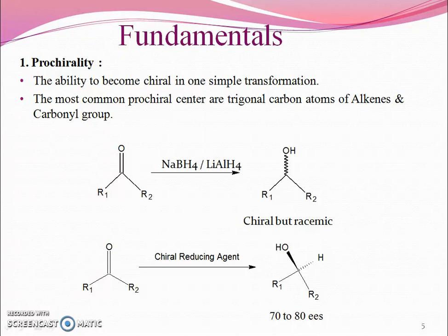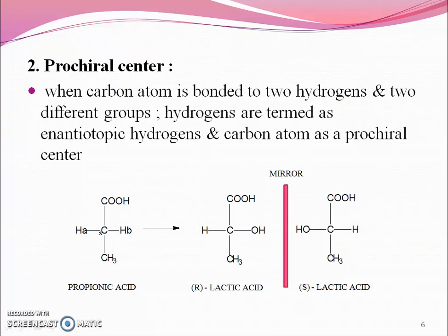Fundamentals. Here we need the concept of prochirality — the ability to become chiral in one single simple transformation. The most common prochiral centers are the trigonal carbon atoms of alkenes and the carbonyl group. The carbonyl group when reduced using lithium aluminum hydride or sodium borohydride gives a chiral center in one single simple transformation — a prochiral center.